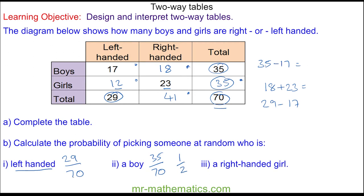And for a right-handed girl, there are 23 right-handed girls out of 70 people in total.